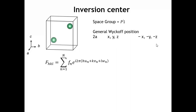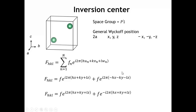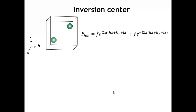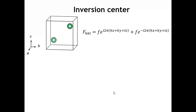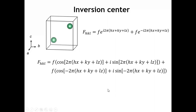Using our generic structure factor equation and plugging in the coordinates of both atoms, we can see that the two terms are practically identical except for the minus sign that comes out of the minus x, minus y, minus z position. To understand the meaning of that, let's go back to the trigonometric form: e to the i φ equals cosine φ plus i sine φ. Writing out the cosine and sine terms for both atoms in the expression gives us two sets of terms.